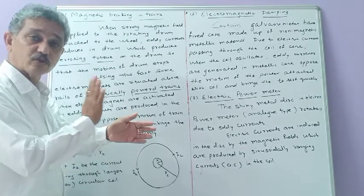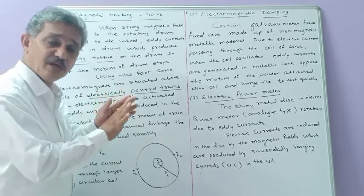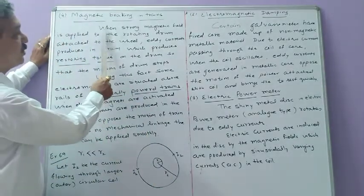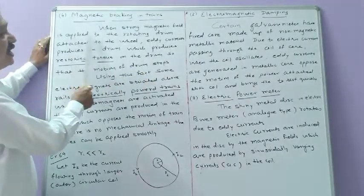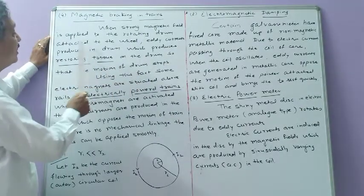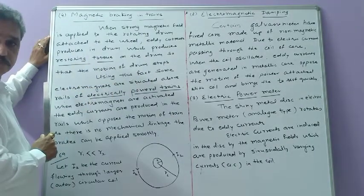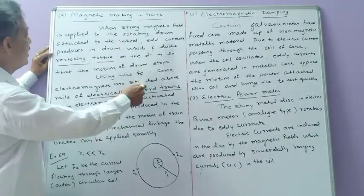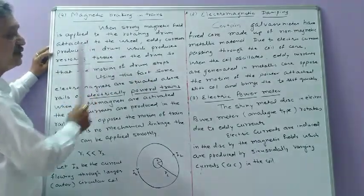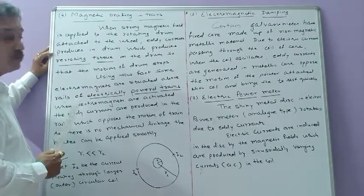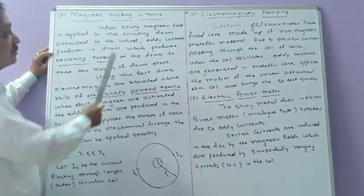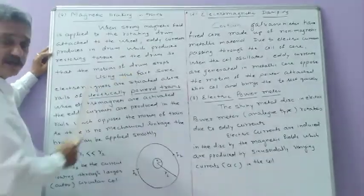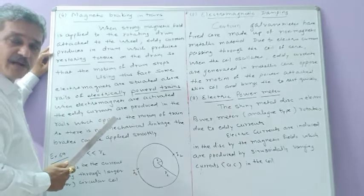A restoring torque is produced when a strong magnetic field is applied to a rotating drum attached to the wheel. Then eddy currents are produced in the drum. When a strong magnetic field is applied to the rotating drum of a vehicle, eddy currents are produced.